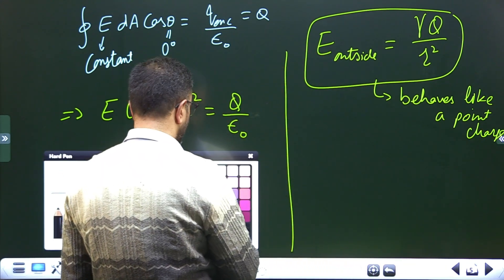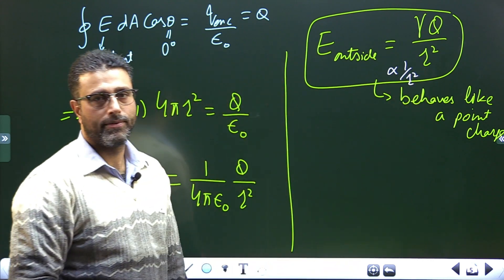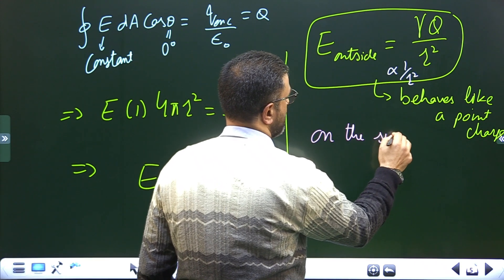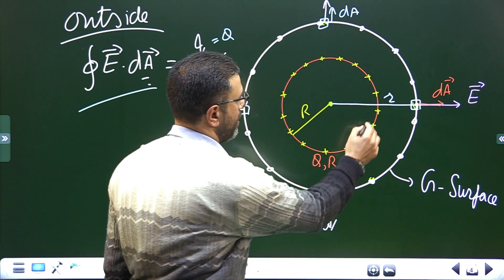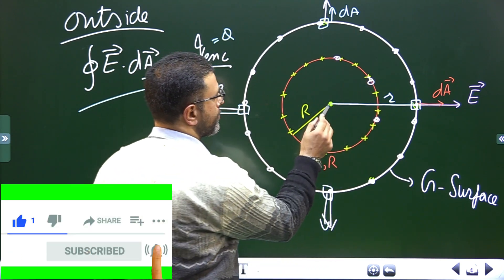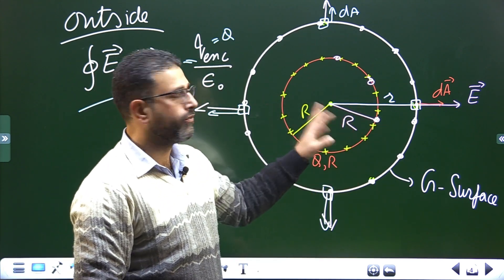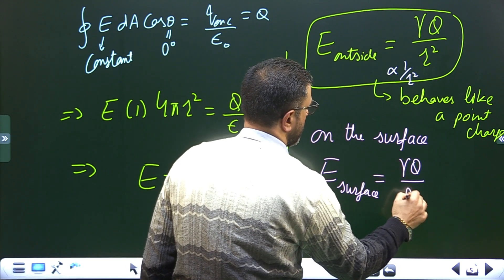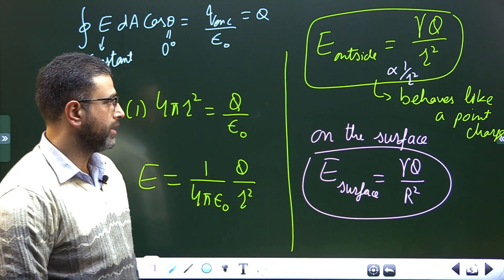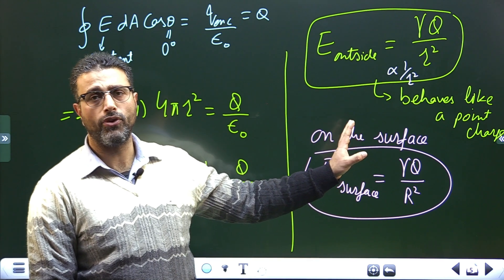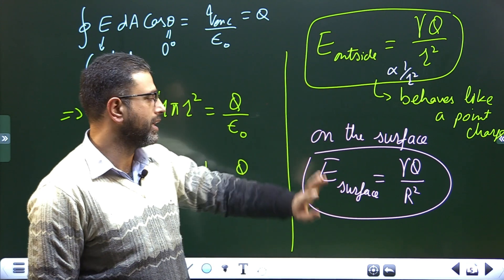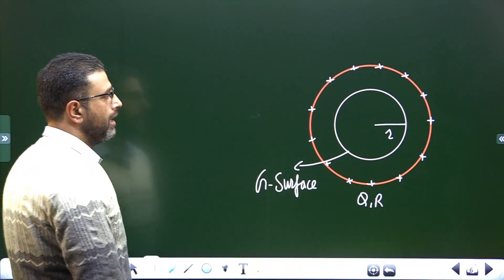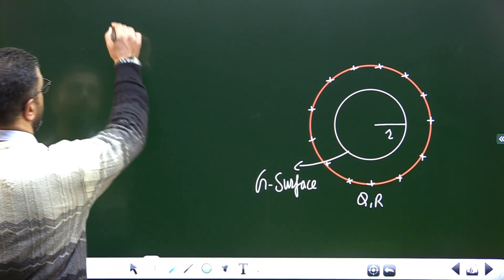The field outside is inversely proportional to r². For a point on the surface of the shell, the distance from the center is simply the radius R, so E on the surface = γQ/R². For points inside the shell, I consider a Gaussian surface of radius r inside the shell and again apply Gauss's law.